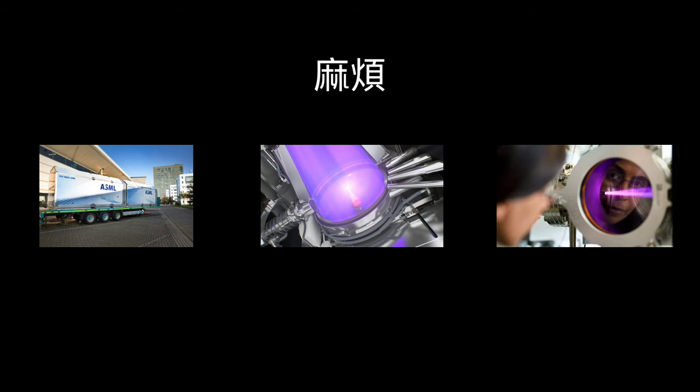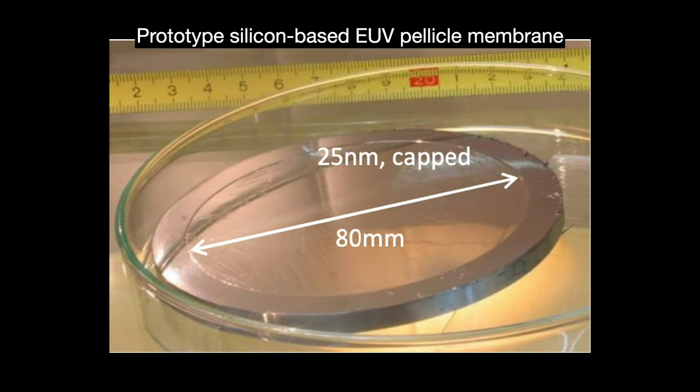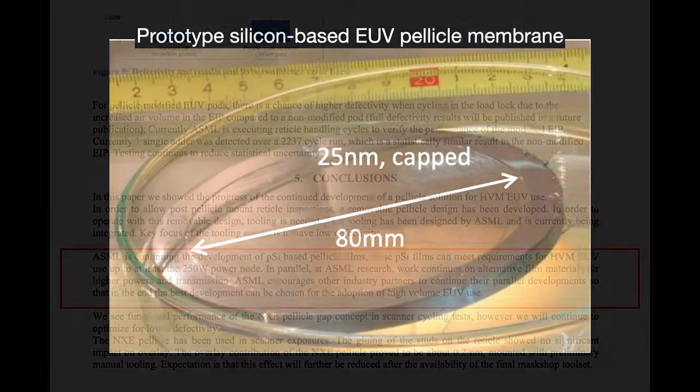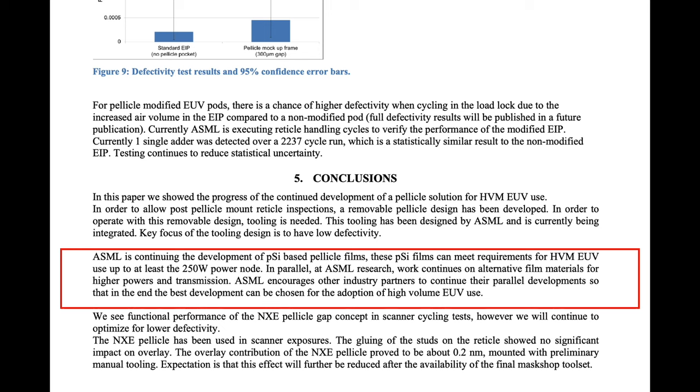The best pellicle at the time was from the aforementioned silicon approach. A thin film made up of polysilicon and silicon nitride that ranges from 25 to 55 nanometers thick. It kind of met ASML's needs, but in a 2016 paper, ASML was still encouraging industry partners to find a better solution than what they had.